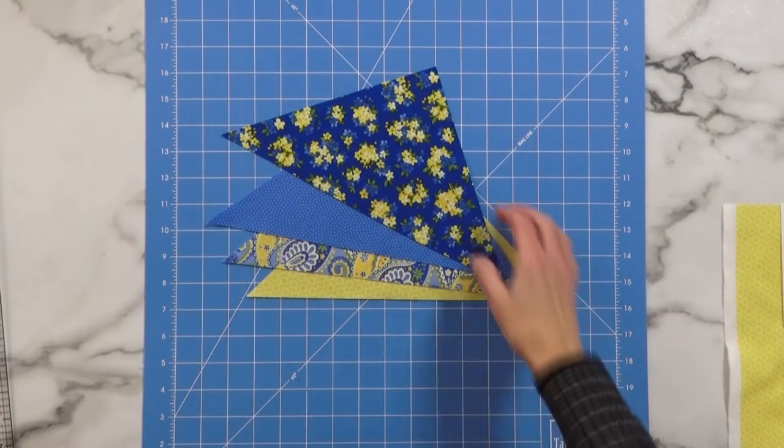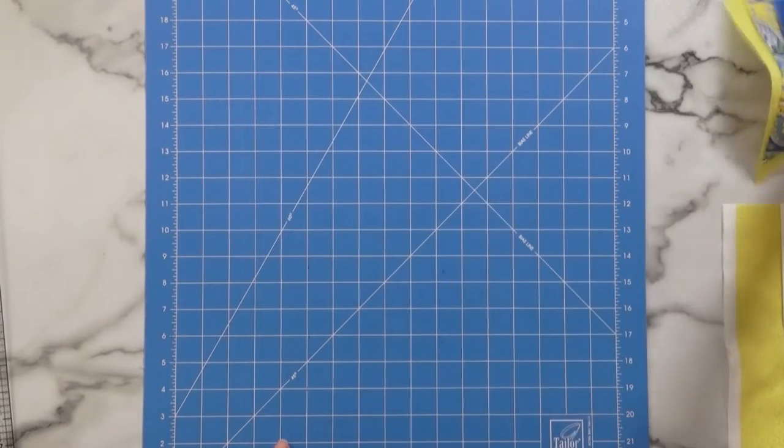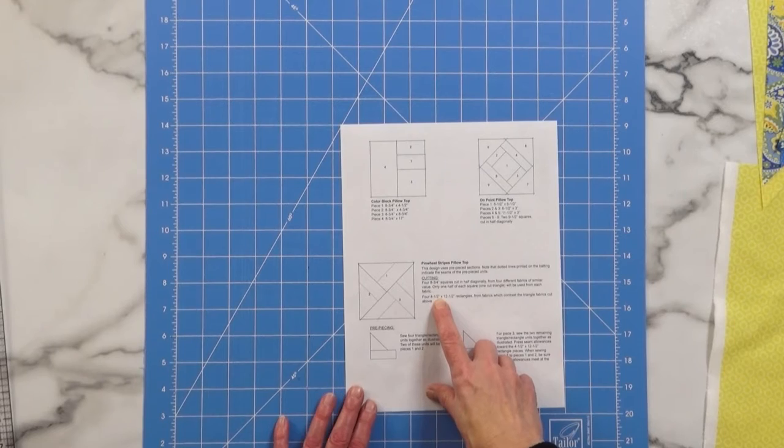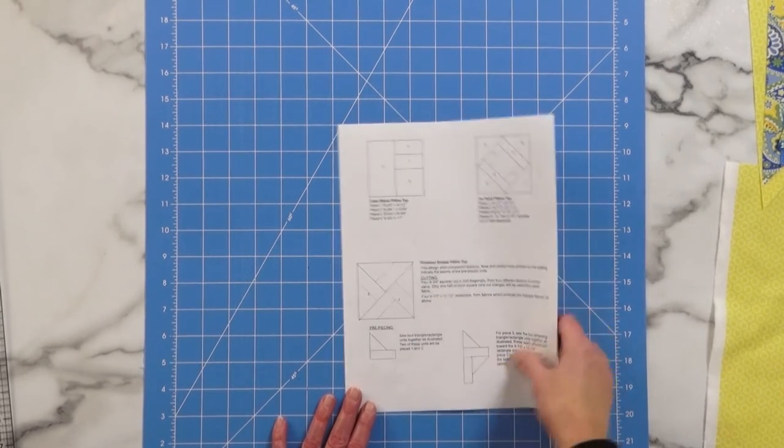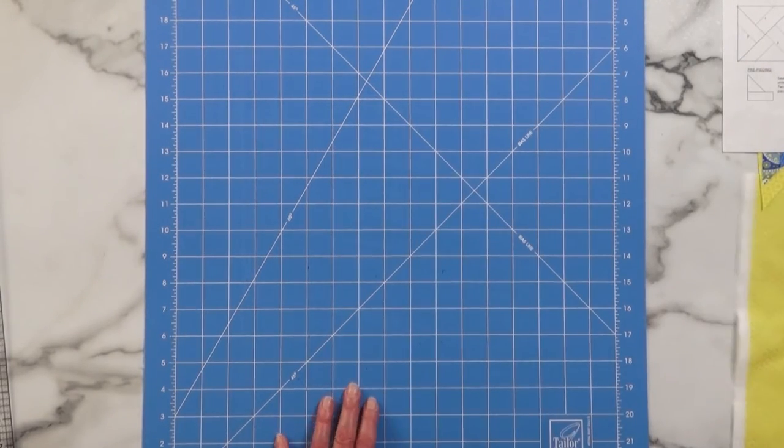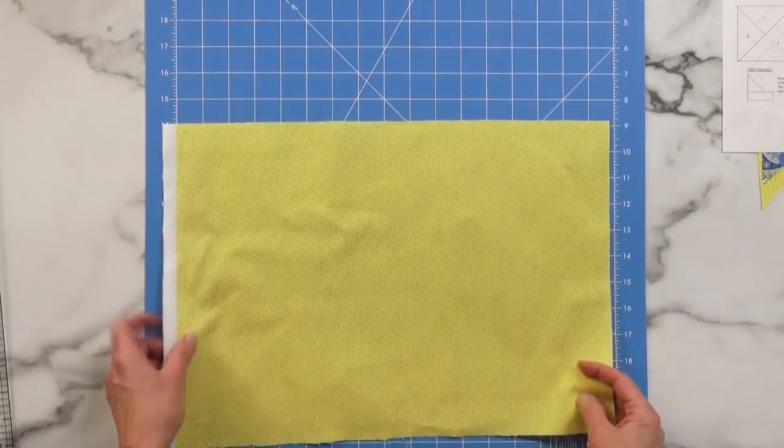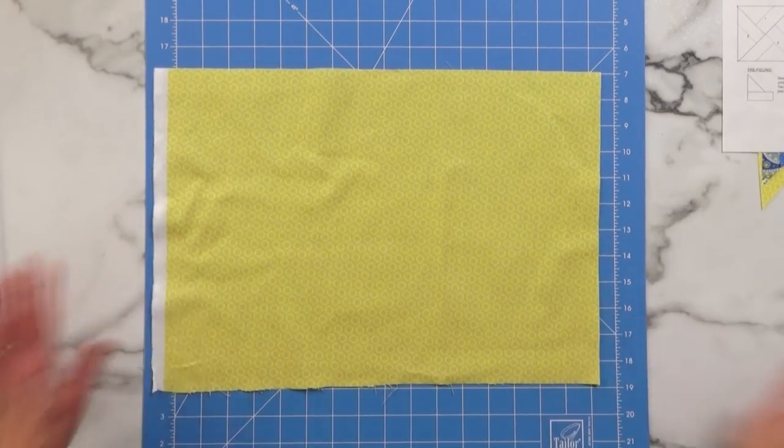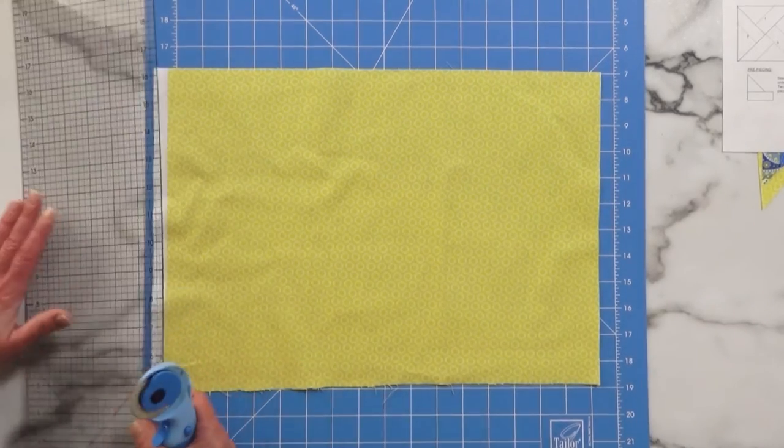I've cut my four triangles as specified. Now I'm going to cut the rectangles. We need four rectangles at four and a half by twelve and a half inches. So I'm going to take this time my rotary cutter and cutting mat and I'm going to cut those using these tools instead.